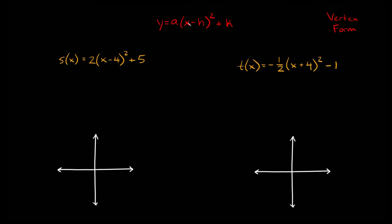Now vertex form. Vertex form is y equals a times the quantity x minus h, squared, plus k. The a value still tells you if the parabola opens up or down and if it's skinny or fat. The h and k are basically your x and y for the vertex — the only difference is for h you take the opposite sign of what appears in the equation.